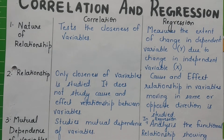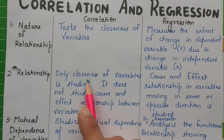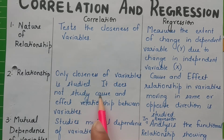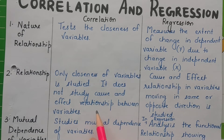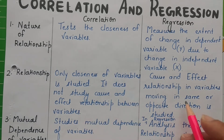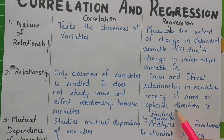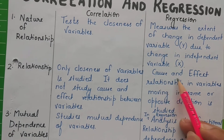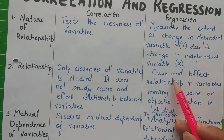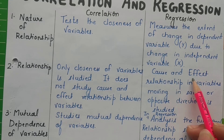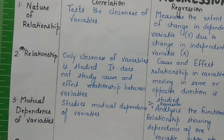Regarding the relationship studied: in correlation, only the closeness of variables is studied. It does not look at which variable is the cause and which is the effect — it does not analyze cause and effect relationship. But in regression, the cause and effect relationship is studied very well. It examines which variable is the cause and which is the effect, and how much effect the causal variable has on the other variable.